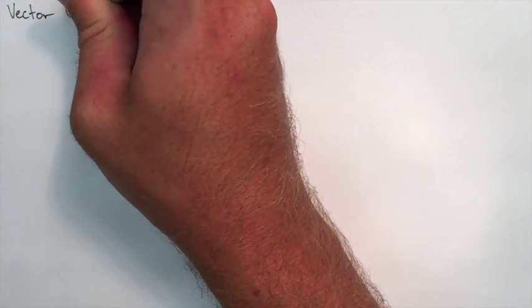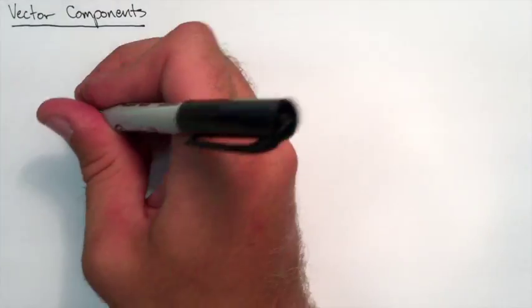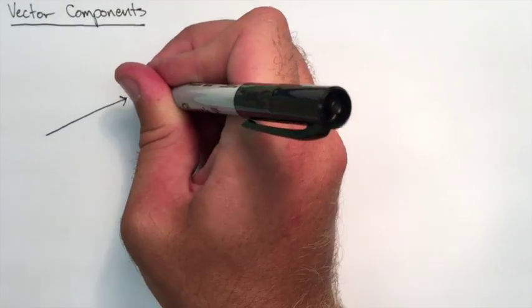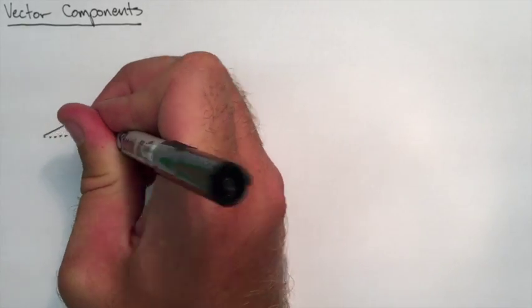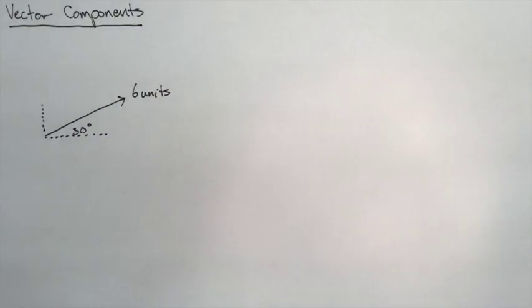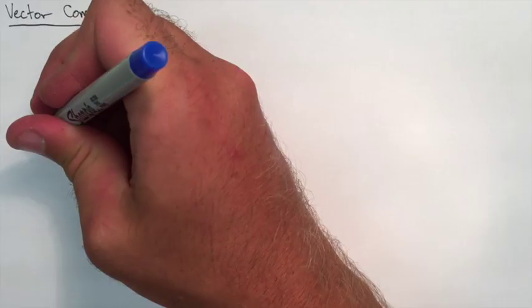Another important concept in this unit would be vector components. We should review that. So let's just say we have an arbitrary vector here that's 6 units long on a 30 degree angle. Let's figure out what the X and Y components are of this vector.